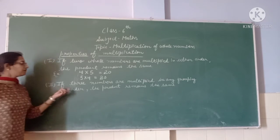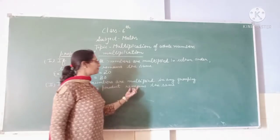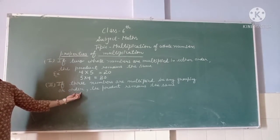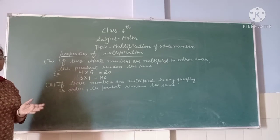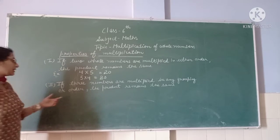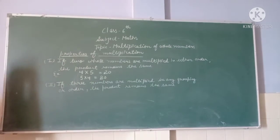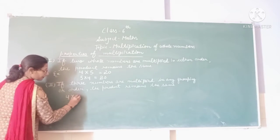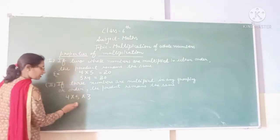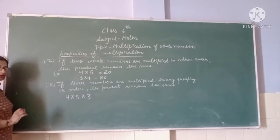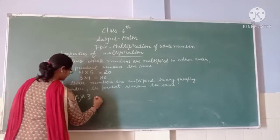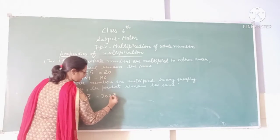The second property is: if three numbers are multiplied in any grouping or order, the product remains the same. For example, take three numbers: 4, 5, and 3. If we multiply the first two numbers, 4 times 5 are 20.